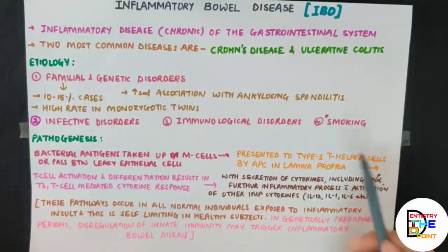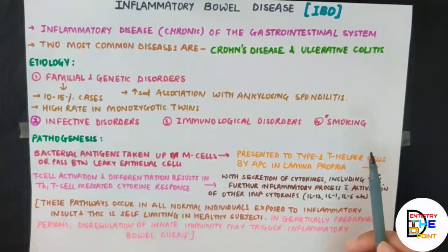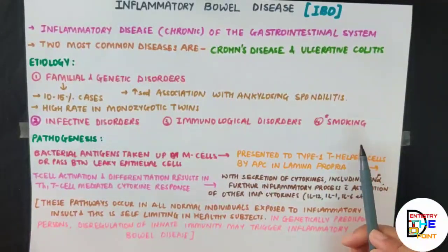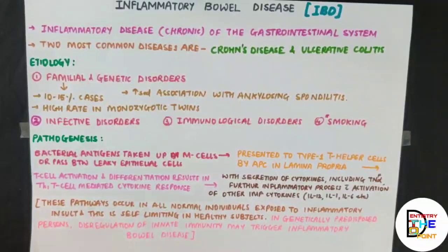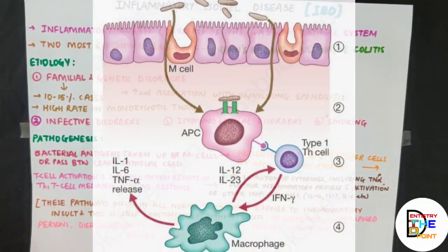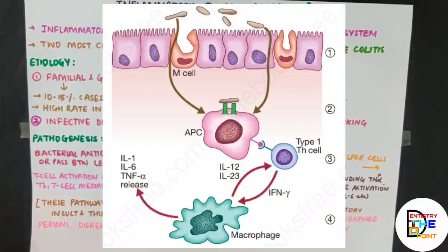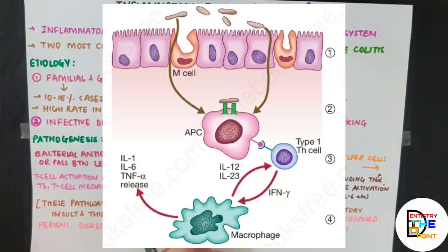Lastly, cigarette smoking is strongly associated with Crohn's disease but not with ulcerative colitis. Moving on to pathogenesis: it's somewhat complicated, but you don't have to go into too much detail. Images will pop up to give you a better understanding. Bacterial antigens are taken up by M cells or pass between leaky epithelial cells.